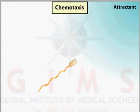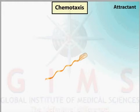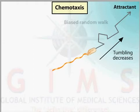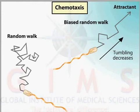As the concentration of an attractant increases, the cell generates fewer signals to switch flagellar rotation and the cell tumbles less often. The pattern of movement in chemotaxis is called a biased random walk, in which the cell tends to migrate towards the attractant. In contrast, a random walk has more frequent changes in direction and shorter runs.